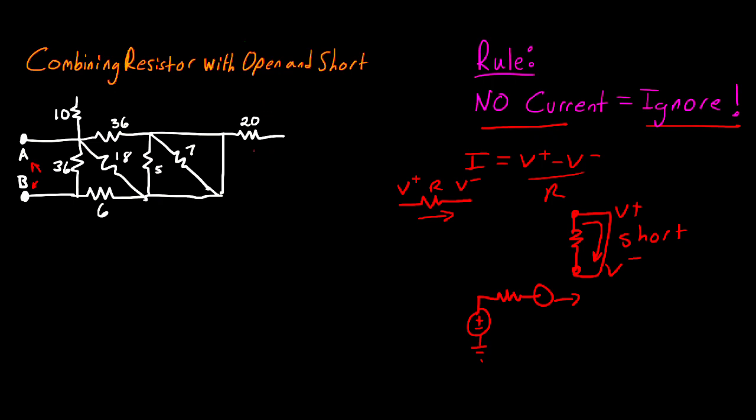The first thing I notice is this 20-ohm resistor on the right. No current can be coming out of this node because there's no circuit for that current to flow through. So that tells me there's no current in the resistor, and we can safely ignore the 20-ohm resistor.